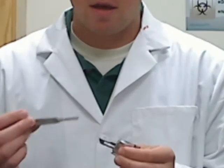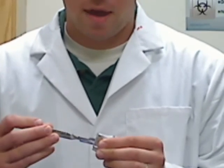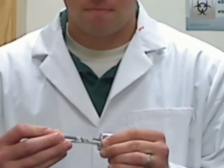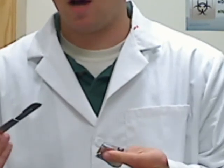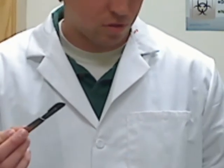Next, take the scalpel blade. Hold it with two fingers and insert the handle. It clicks right in. Now you can remove the scalpel from the packaging and dispose of the aluminum foil.